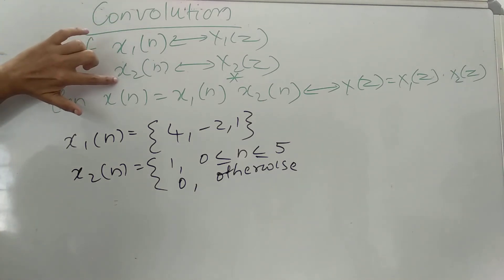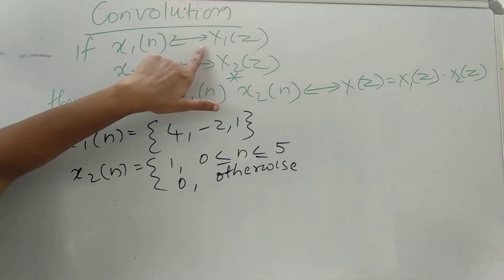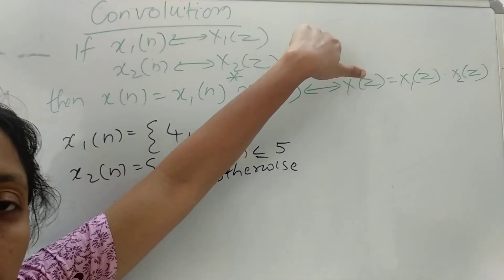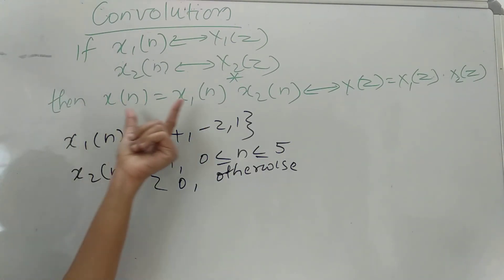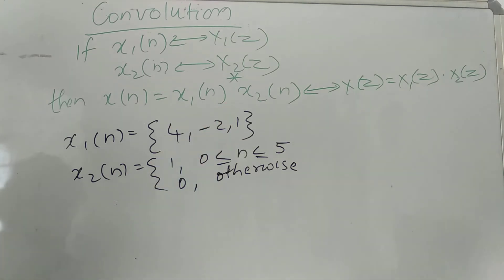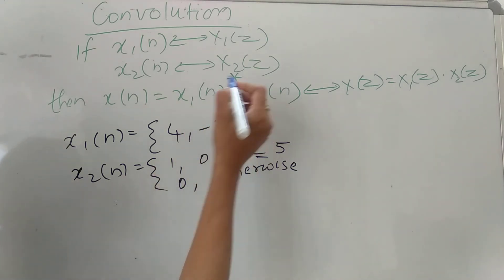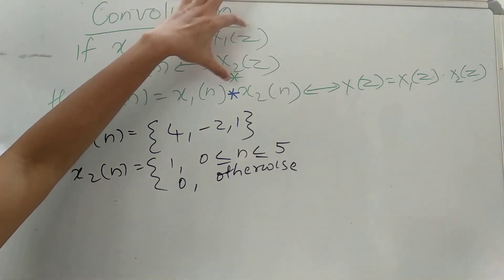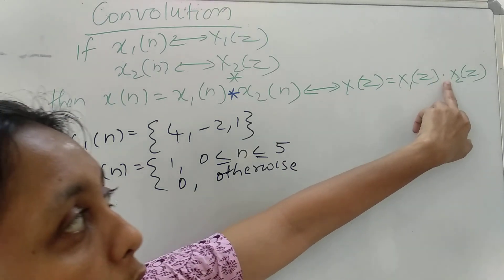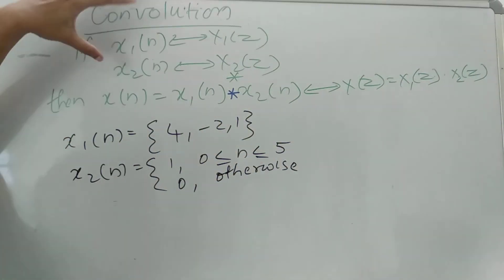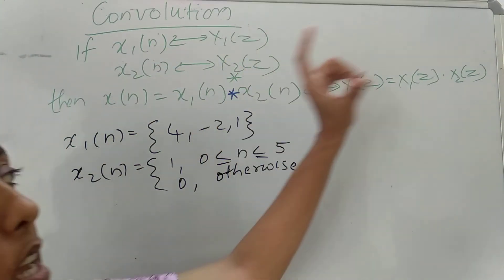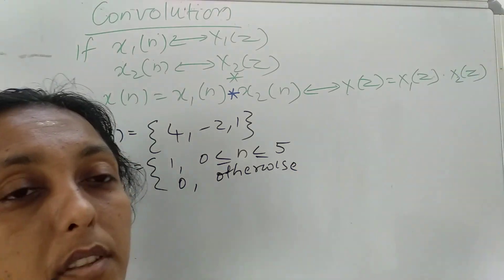For that, let's consider we have two functions X1 of N and X2 of N. X1 of N has the Z transform pair X1 of Z, and X2 of N has the Z transform pair X2 of Z. According to the convolution property, X1(N) convolved with X2(N) gives the product of their Z transform functions, X1(Z) multiplied by X2(Z).